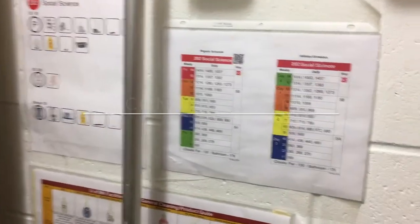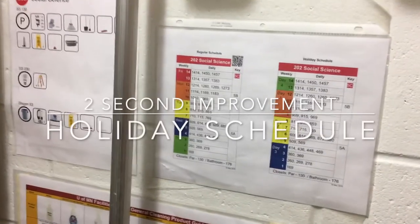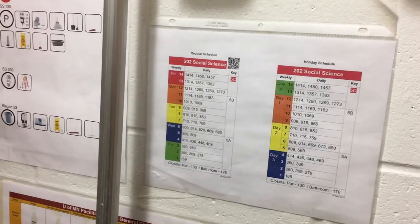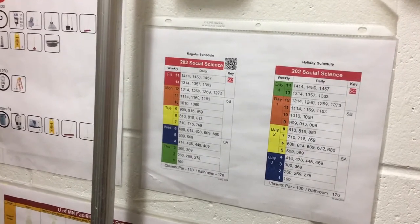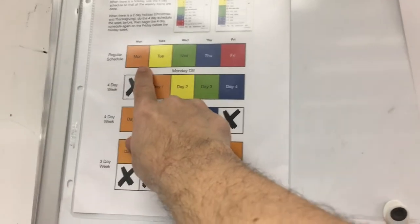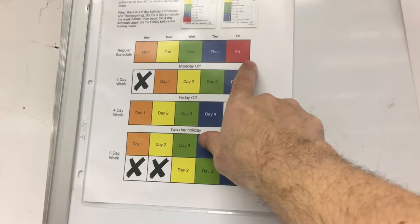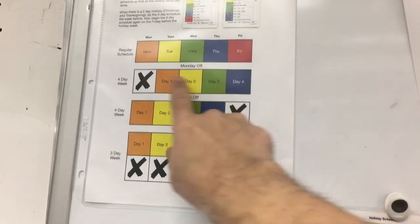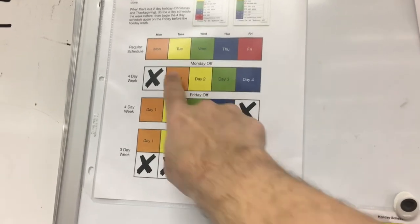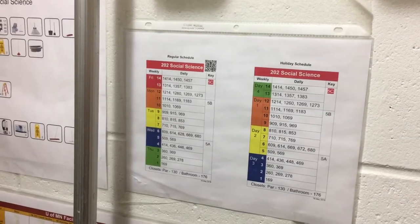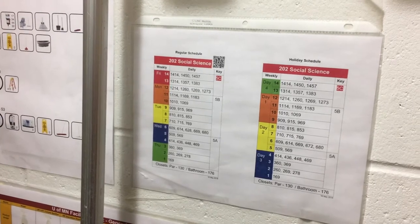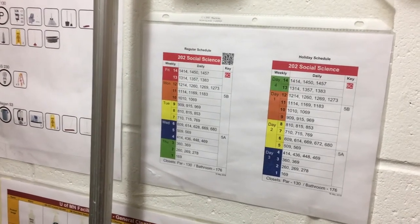Here is an example of our building schedule. You can see there are two schedules here. One problem we had is that a normal week has five days, but some days have a holiday. What the supervisor would do is, if we missed a Monday because of the holiday, they would tell us to just do Monday and Tuesday all together on Tuesday.